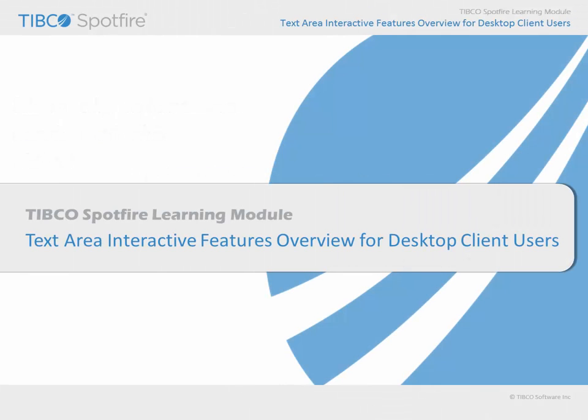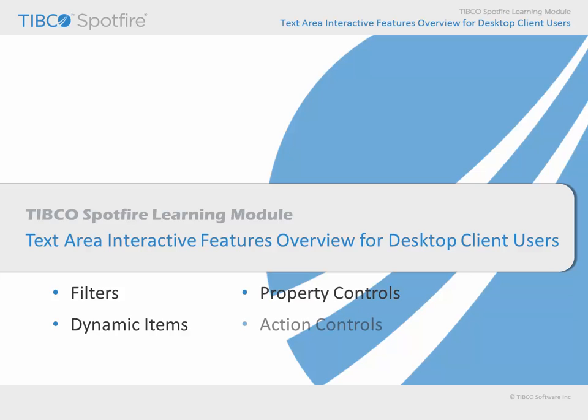In this learning module, we will take a high-level look at Spotfire text areas. Text areas can be configured as an important component of the interactive analysis environment because, in addition to providing an arena for text and images, text areas can also provide interactive elements, which include filters, dynamic items, property controls, action controls, and JavaScript. When combined with instructional text, these elements become powerful tools toward the design of routine analysis workflows.